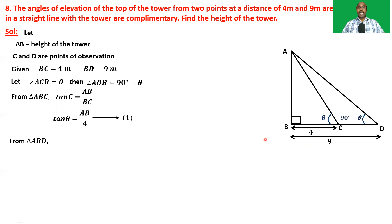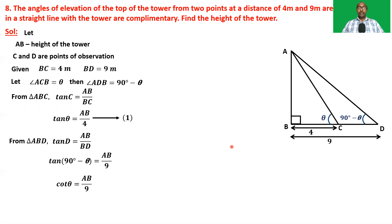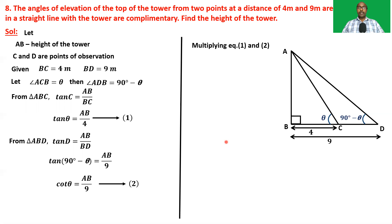From triangle ABD we can write tan D equals AB by BD. Angle D is 90 minus theta, so tan(90 − theta) equals AB by nine. But we know that tan(90 − theta) equals cot theta — the complementary of tan is cot. So tan(90 − theta) is cot theta. Take it as equation two.